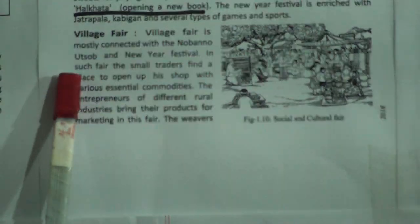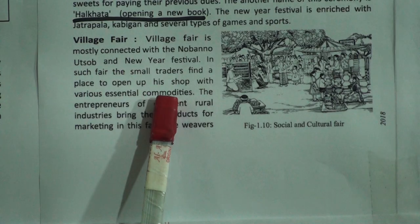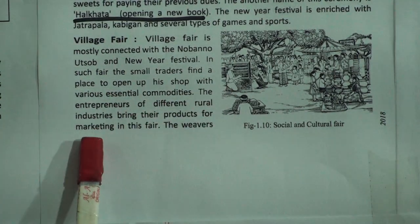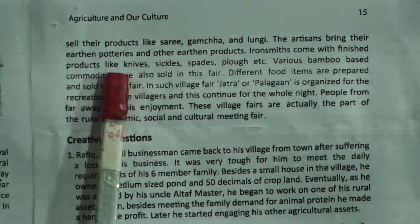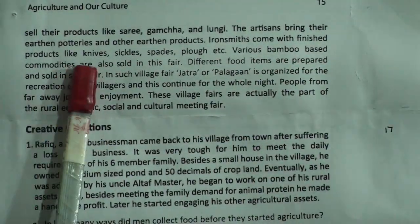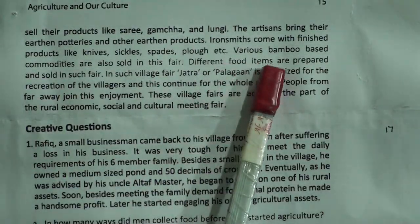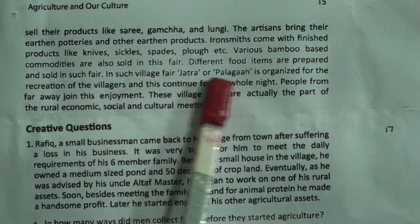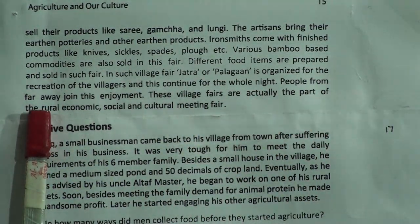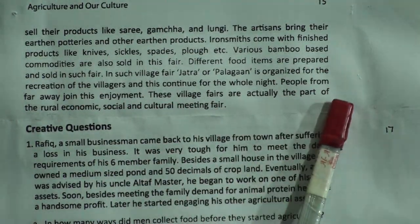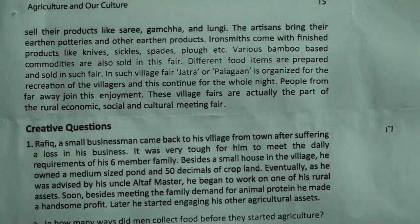The village fair is mostly connected with the Nabanna and New Year festival. Small traders find a place to open shops with various essential commodities. Entrepreneurs of rural industries bring their products; weavers sell saris, gamchas, and lungis; artisans bring earthen pottery; ironsmiths come with knives, sickles, spades, and ploughs; bamboo-based commodities are also sold. Different food items are prepared and sold. Jalsha or palagan is organized for the recreation of villagers and continues the whole night. These village fairs are part of rural economic, social, and cultural life.